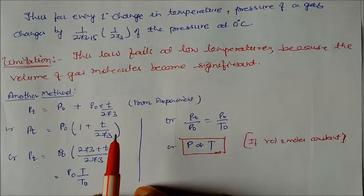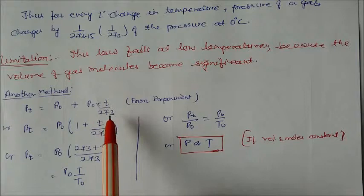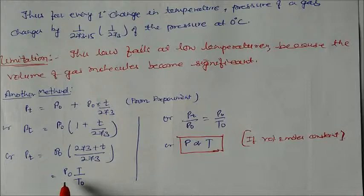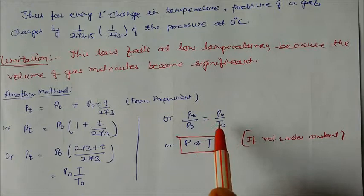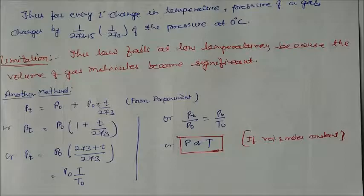There is one more method to get this derivation. P_t = P₀ + P₀ × T/273. This experiment is derived from P₀ = 1/273. So P_t = P₀(273 + T)/273 = P₀T/T₀, or P_t/T = P₀/T₀, which shows P is proportional to temperature. Here, the condition is volume and moles should be constant. This is the derivation of all laws.